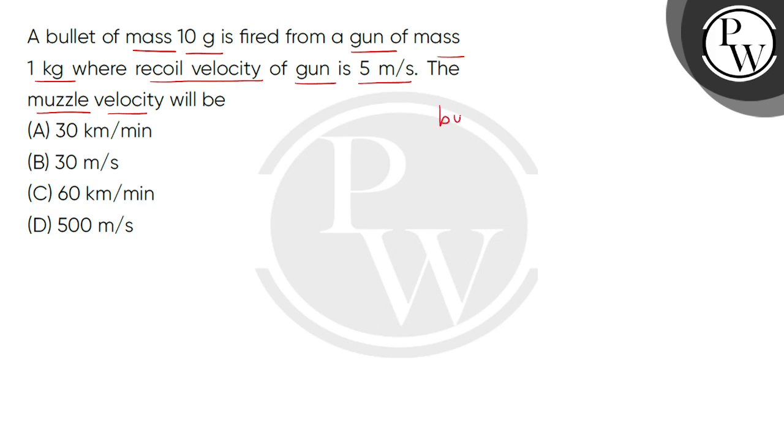So, children, here we have a system given, which is a bullet and gun. Now, as the external forces will be zero, the total linear momentum, that is the initial linear momentum of bullet plus the initial linear momentum of gun is same as the final linear momentum of bullet and the final linear momentum of gun.